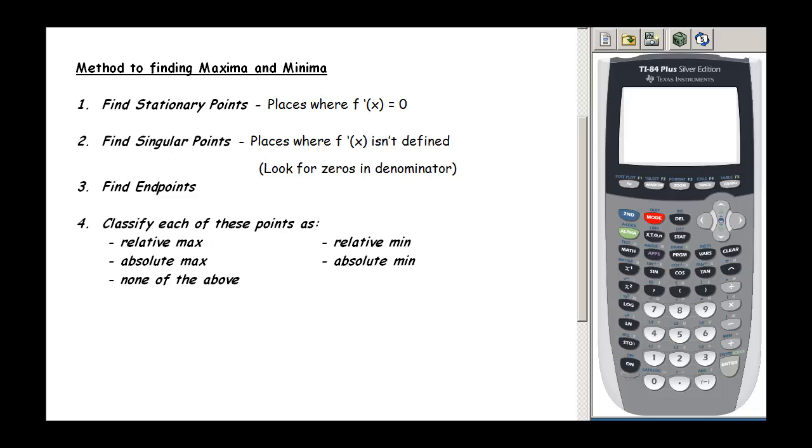First we are going to locate the stationary points. These are the places where the derivative is zero. Then we locate the singular points, if there are any. These are the places where the derivative isn't defined. And these are spots where typically you find your function has a zero in the denominator. So for instance, if our denominator looks like the cube root of x minus 4, we would make sure that x couldn't equal 4 because that would give us a zero in the denominator.